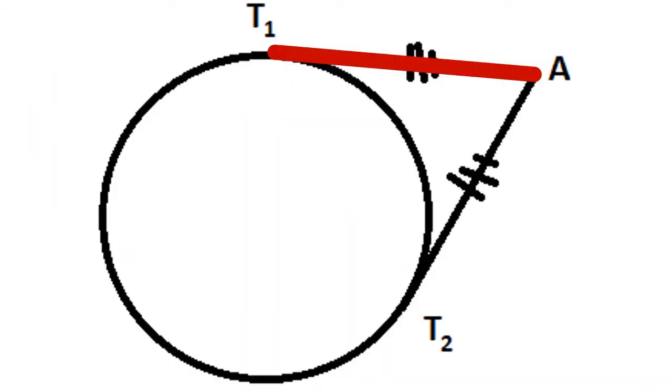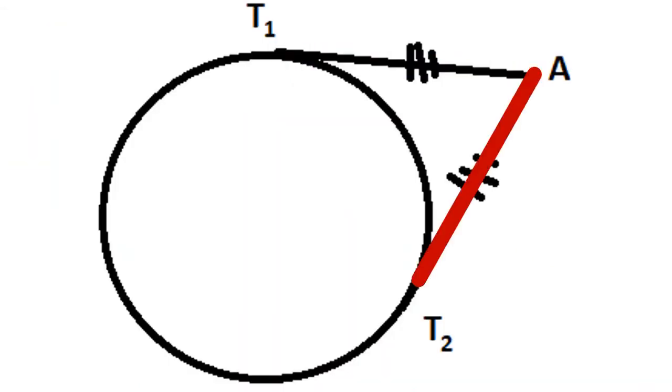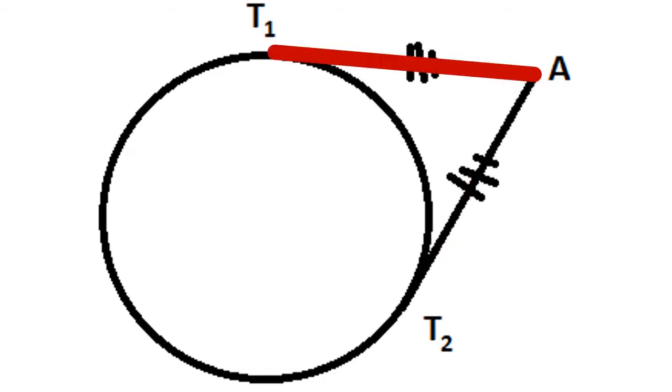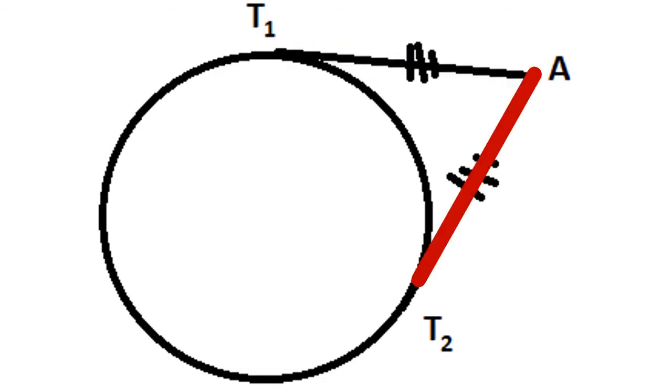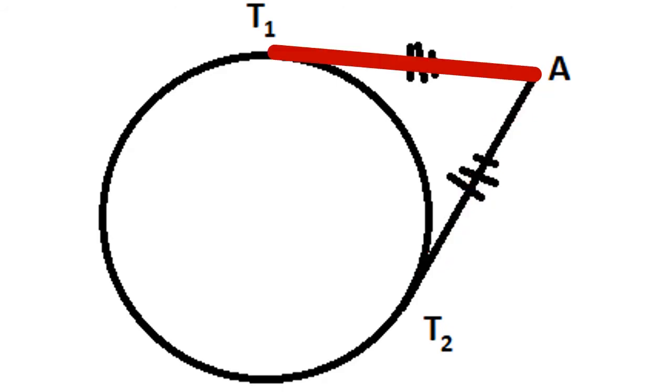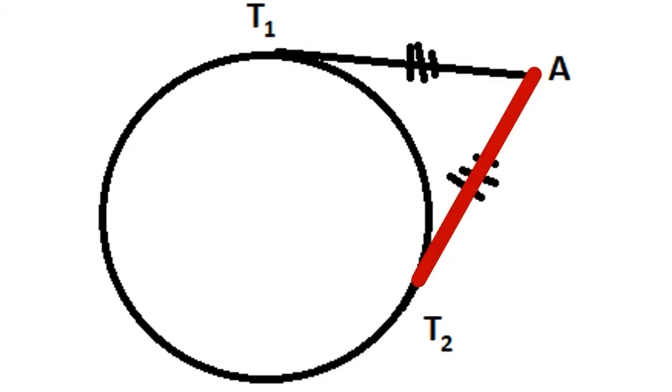Just as any two line segments drawn from some point A outside of a circle where each segment is tangent to that circle, those segments will have the same length.